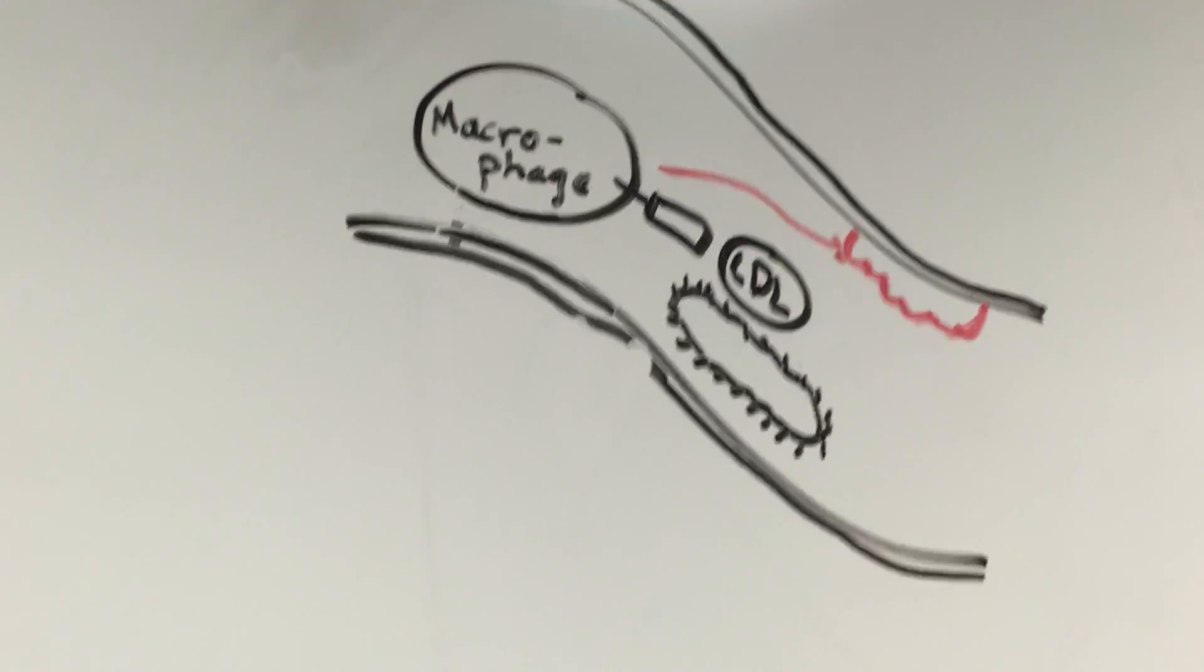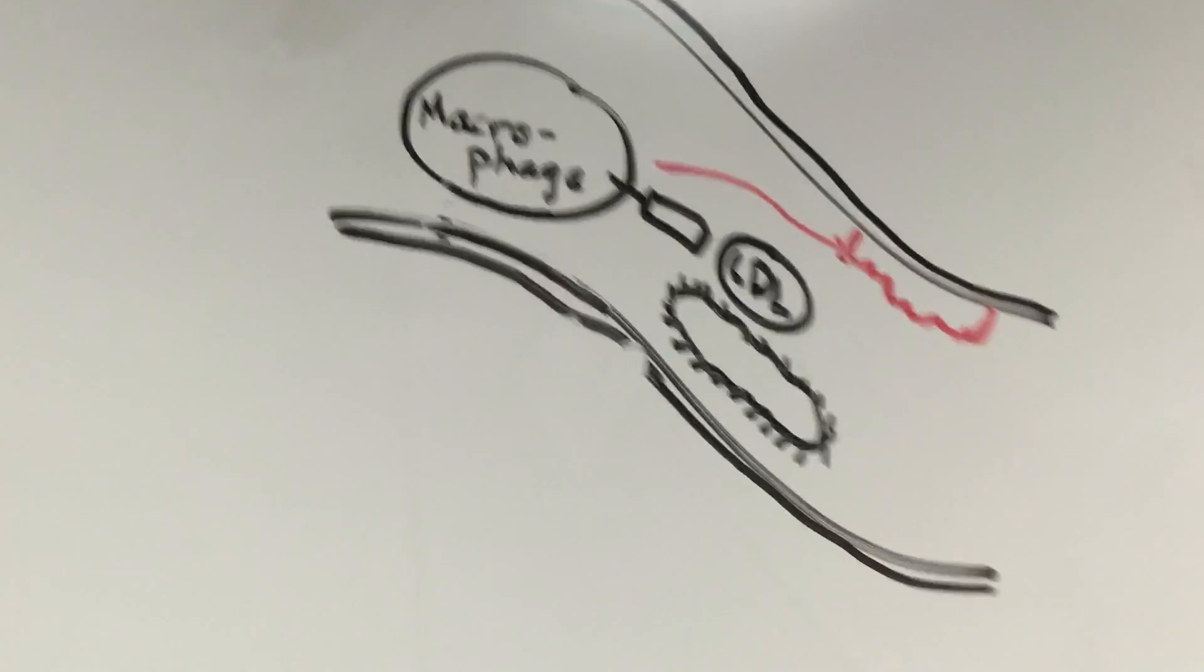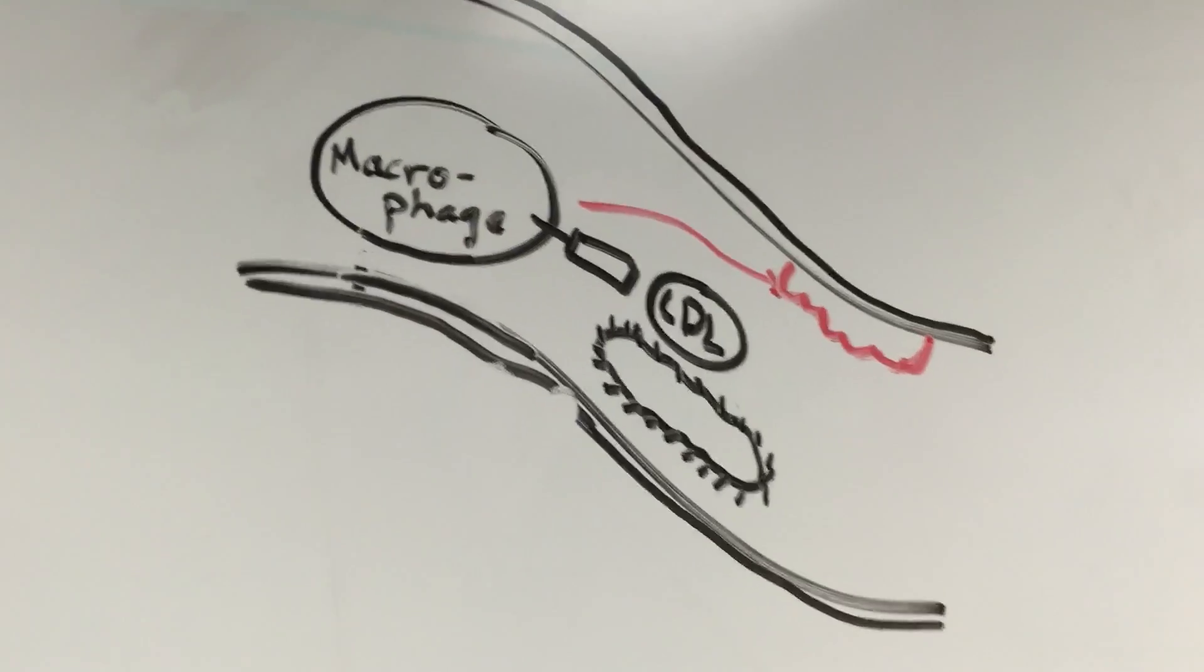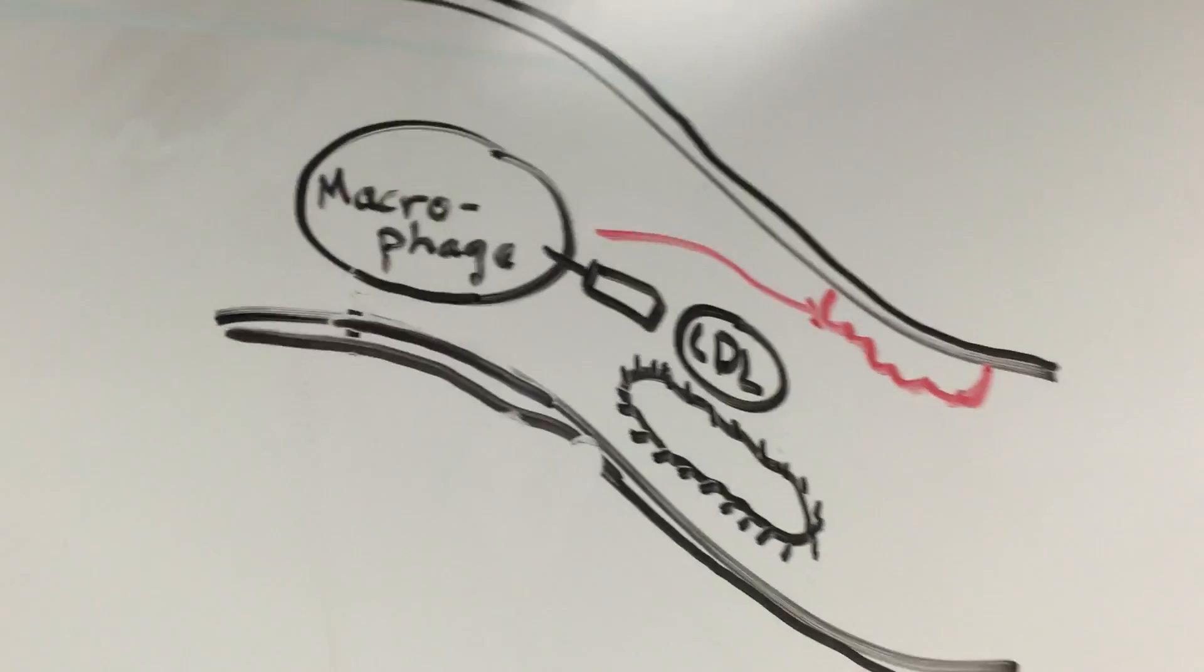Scavenger receptors are receptors on macrophages, which are a type of white blood cell. Their job is to scavenge the blood for things that are harmful.